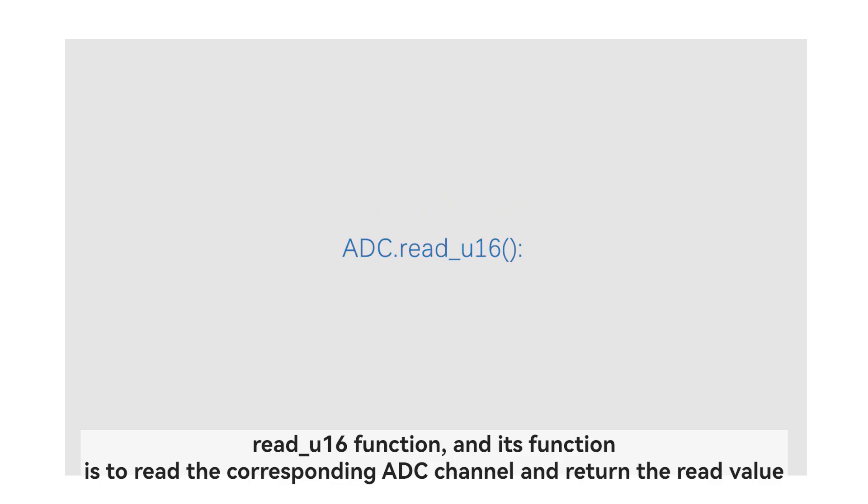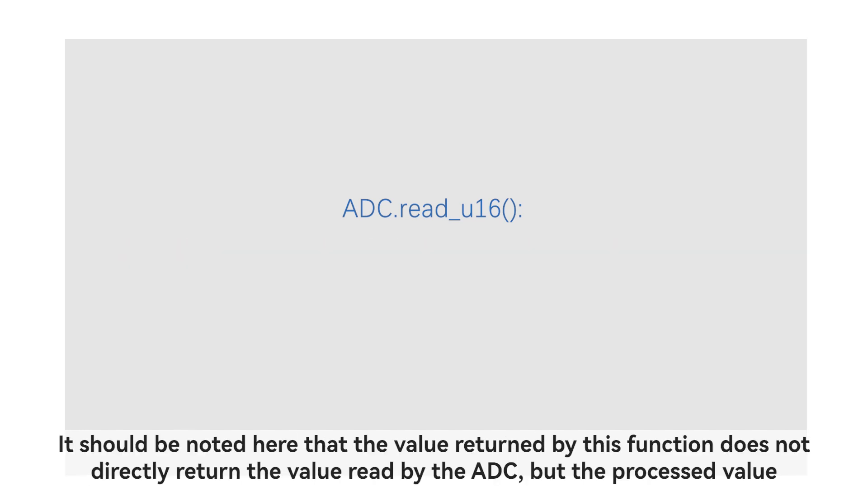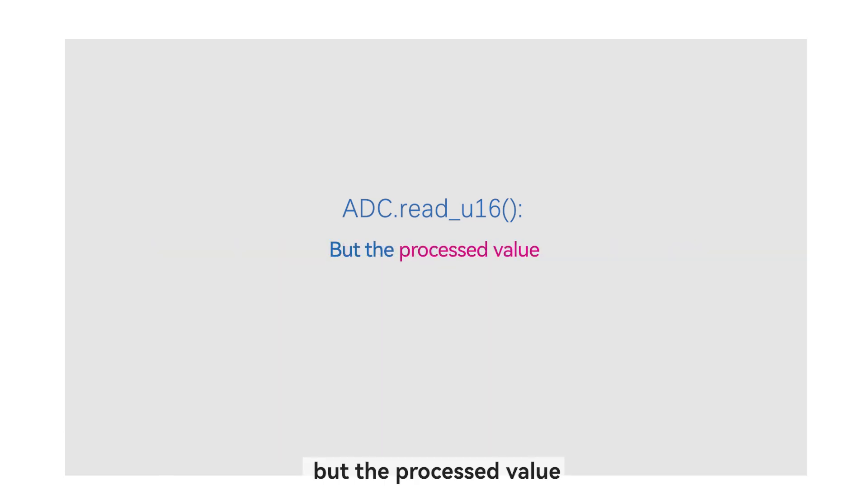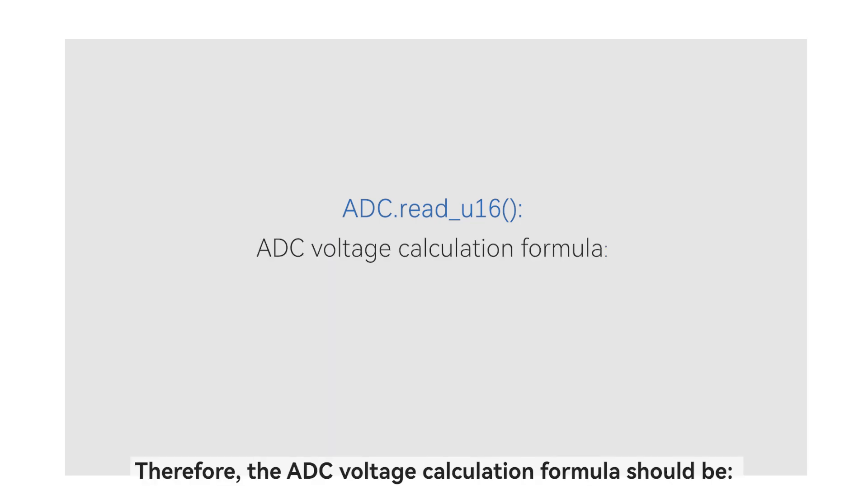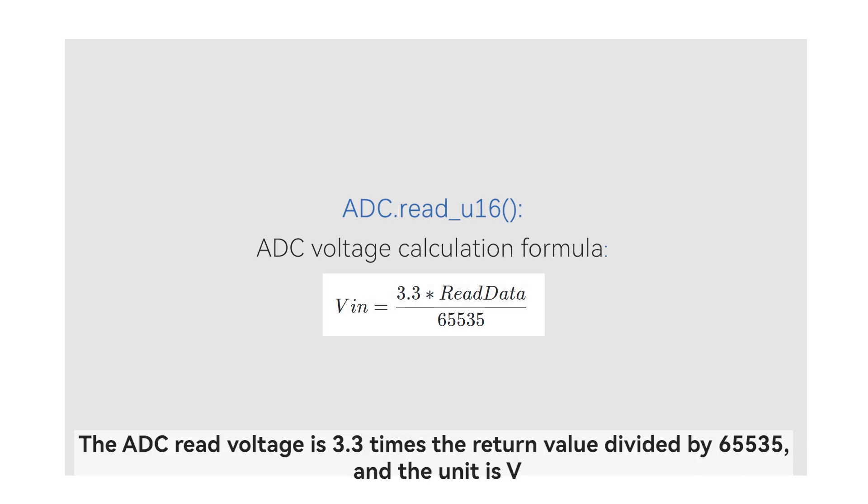read_u16 function, and its function is to read the corresponding ADC channel and return the read value. It should be noted here that the value returned by this function does not directly return the value read by the ADC, but the processed value. The value range is 0-65535. Therefore, the ADC voltage calculation formula should be: The ADC read voltage is 3.3 times the return value divided by 65535, and the unit is V.